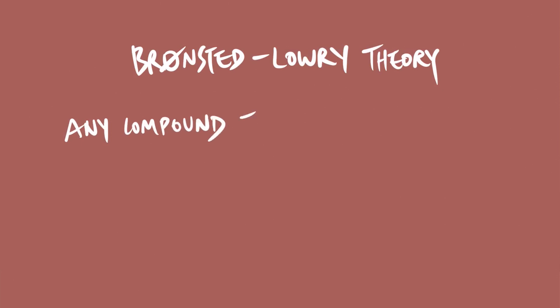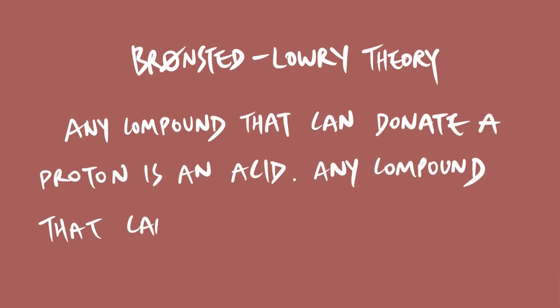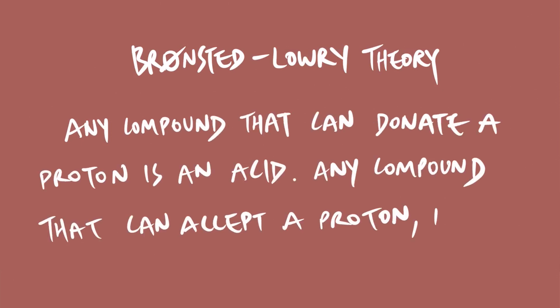Before we can learn about the differences between acids and bases, we need to know how we classify them and what defines an acid versus a base. There are two main ways to do this: either you use the pH scale, which is from 0 to 14, or you use the Bronsted-Lowry theory, which focuses less on pH but more on how a proton is transferred — whether it's accepted or donated.